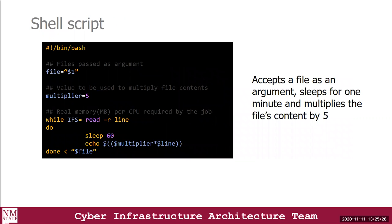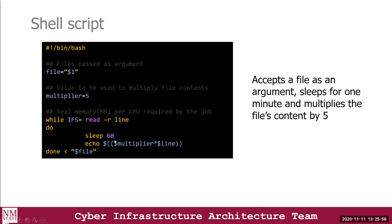The program takes input files as arguments, assigns a multiplier variable with a value of five, looks through all the files to process, and multiplies the content of each file by five. Before doing so, it sleeps for 60 seconds — this is intentional so the program takes enough time for us to observe it in the queue and confirm it is actually processing.